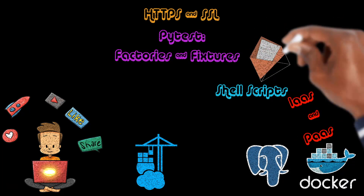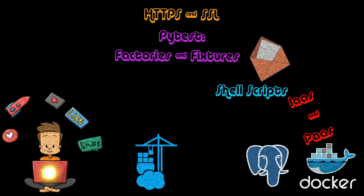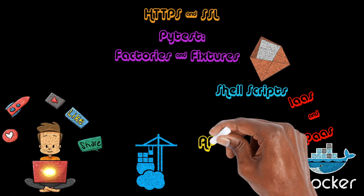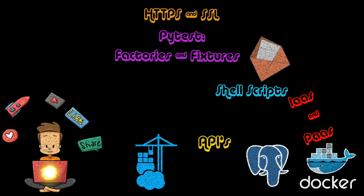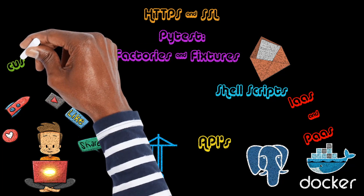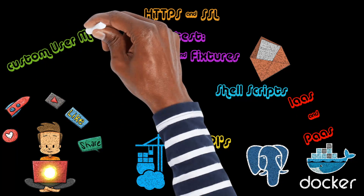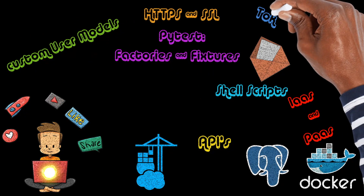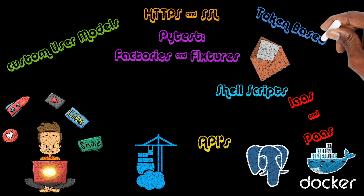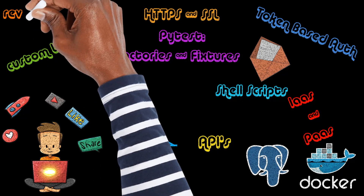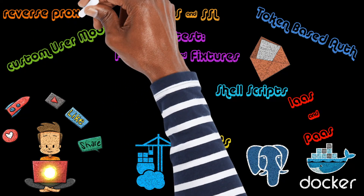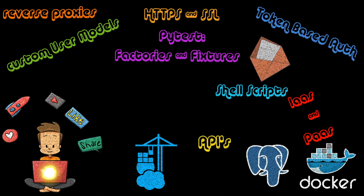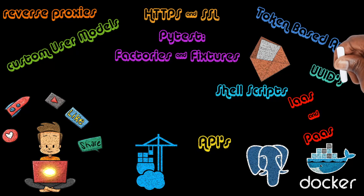Working with Postgres within a Docker container including how to perform backups using shell scripts, working with emails using Mailhog in development and Mailgun in production, building API endpoints with the Django REST framework, custom user models and model managers in Django, token-based authentication, how to use reverse proxies, UUIDs — the advantages and disadvantages — and how surrogate primary keys solve this.